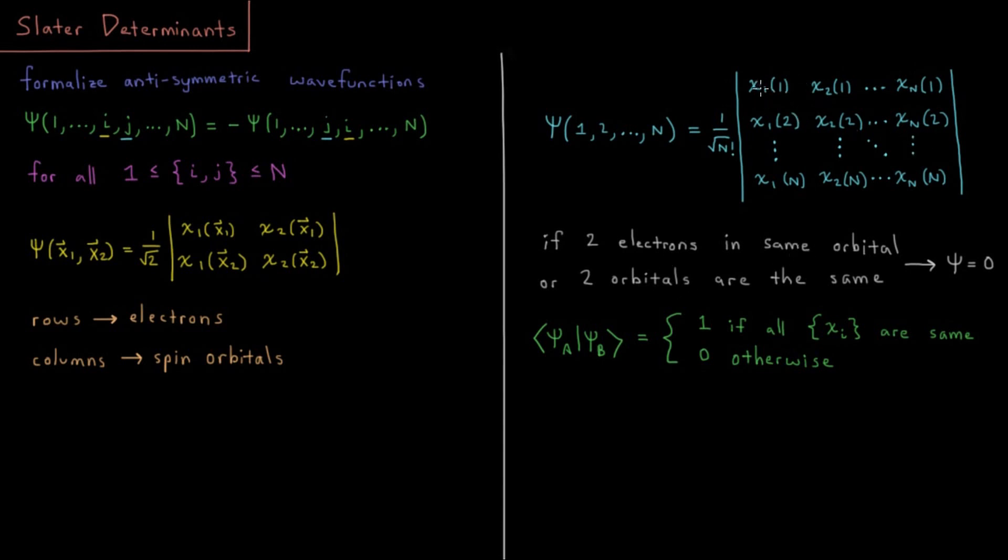We have columns of spin orbitals, as I mentioned, and rows of electrons going from 1 to n in each case.